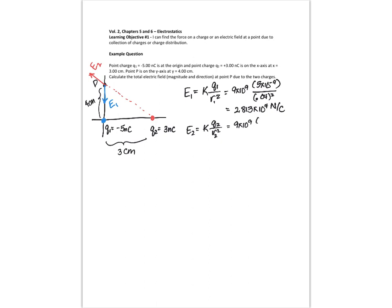Electric field 2 is going to be k q2 over that distance squared. The charge q2 is 3 nanocoulombs, and the distance, this actually ends up to be 5 centimeters because this is a 3-4-5 triangle. So our distance is 5 centimeters from q2 to point P.